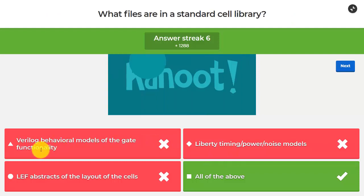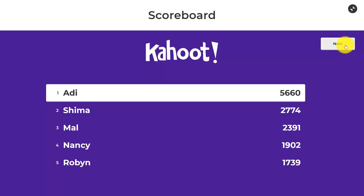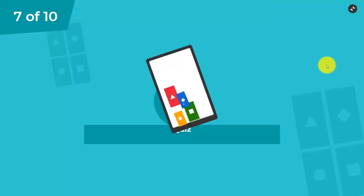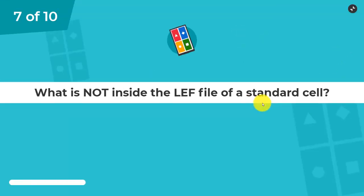So going back, Verilog behavioral models that we saw that we have. Liberty timing, power, and noise models, obviously we discussed in depth in this lecture. And LEF abstracts of the layout of the cells, we discussed in depth as well. Look at that, I'm on a streak over here. So we'll go over to question 7.